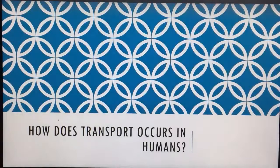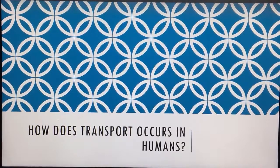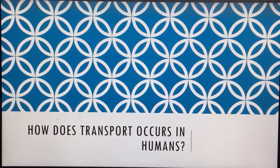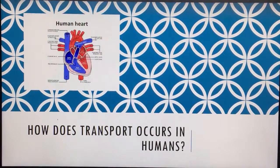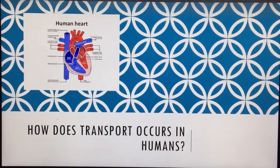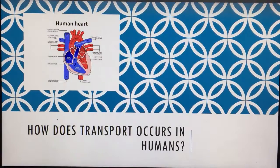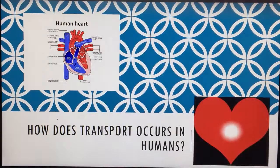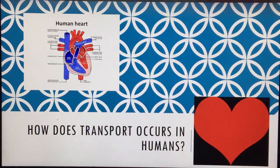So how does transport occur in humans? It is with this organ. This is called the human heart. Everybody would have seen it. This picture looks a little difficult having so many labels, but we got to keep it simple. Heart pumps the blood and the blood is the carrier of everything.